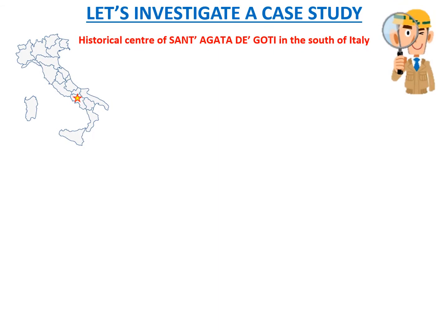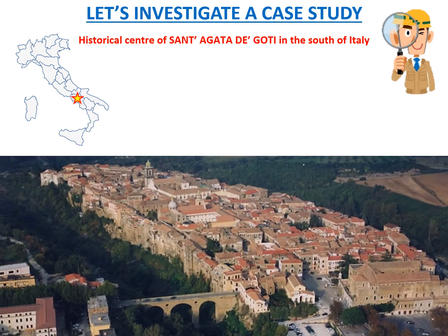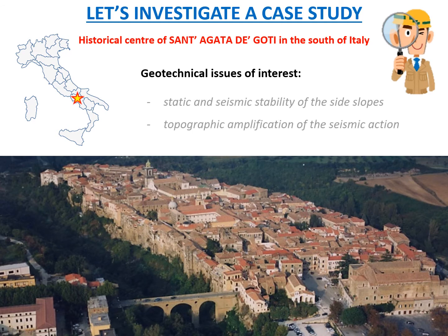Consider the case of the historical centre of Sant'Agata di Gotti in the south of Italy, which extends for 1.5 square kilometres on the crest of a hill that is 50 metres high. The hill is composed of yellow and grey tuff, inside which are about 160 anthropic cavities derived from the extraction of building materials. This particular conformation, typical of many centres of southern Italy, amplifies both the seismic hazard of the site and its susceptibility to landslides on the sub-vertical side — a very interesting issue that was addressed in a BIM-based project.